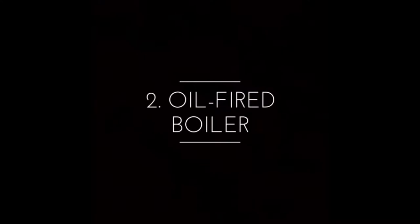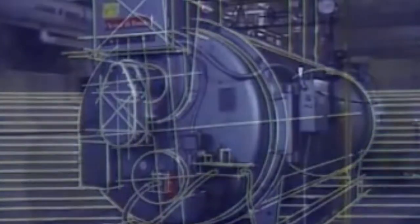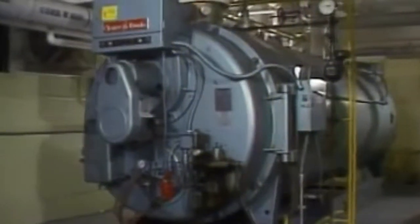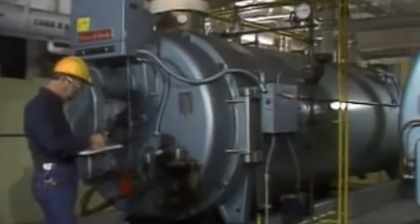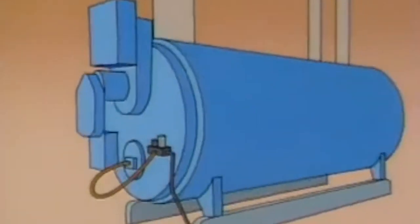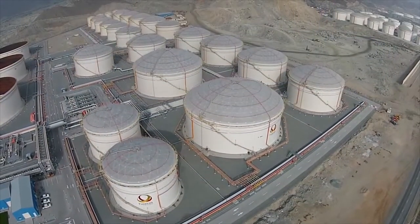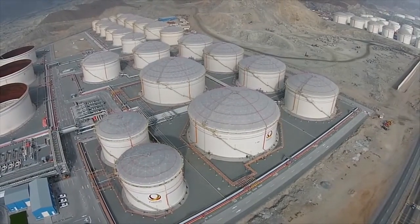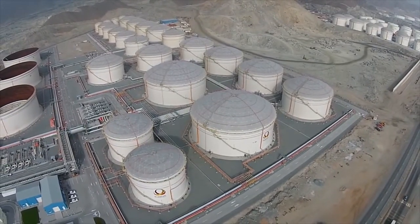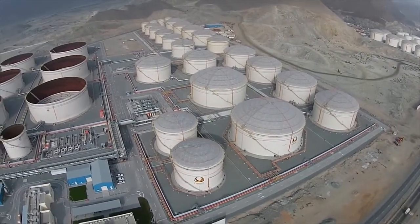Oil fired boilers are quite popular for small scale use due to their simpler design than coal-fired boilers. Fuel oil is commonly used for fire tube boilers, which require only a burner and a tube network for hot gas flow inside a water tank. These boilers generally use diesel fuel, commonly known as high-speed diesel. The simple design makes them very suitable for low-pressure steam production with low steam production capacity.